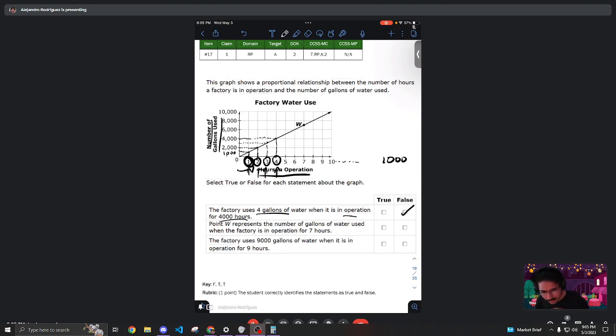Next says: the point W represents the number of gallons of water used when the factory is in operation for seven hours. So I'm gonna go ahead and highlight the point W with purple—it's right here on the graph, point W.